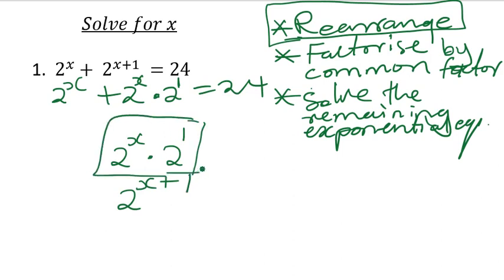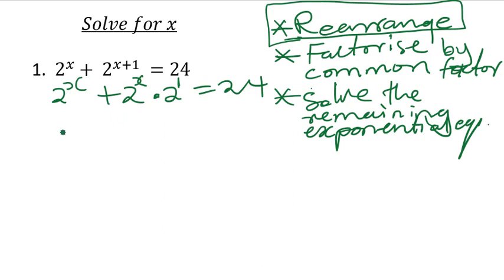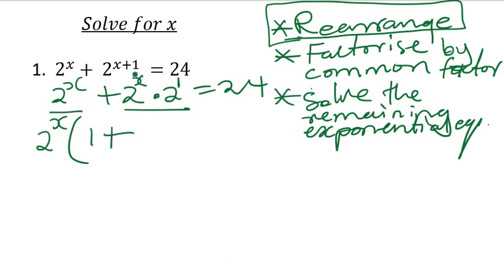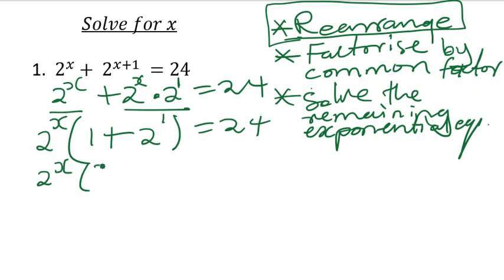You need to take out the common factor. We are having two terms, so the common factor is 2^x. If I write 2^x, then on that side I'm left with 1 plus — taking 2^x out from the second term — I'm left with 2^1, close bracket, equal to 24. Now 2^x multiplied by (1 + 2), which is 3, gives us 24.